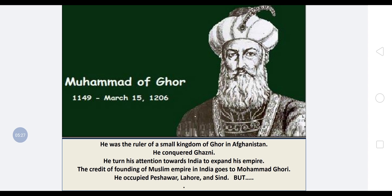Muhammad Ghori was the ruler of a small kingdom of Ghazni in Afghanistan. After consolidating control there, he turned his attention towards India to expand his empire, giving charge of Ghazni to his brother. The credit for founding the Muslim Empire in India goes to Muhammad Ghori. He occupied Peshawar, Lahore, and Sindh.